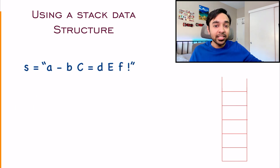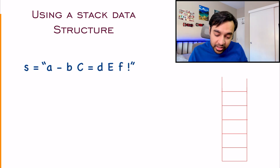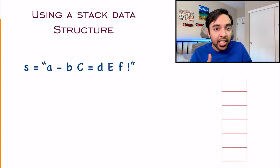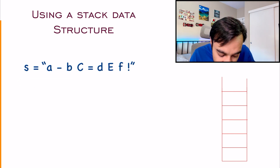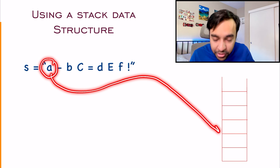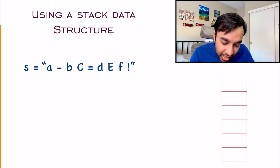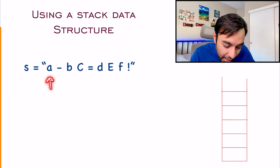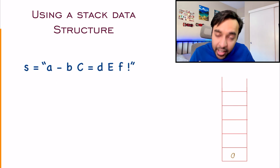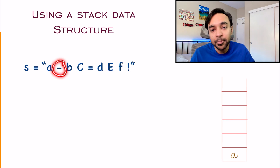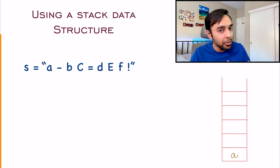If you're new to stacks, just check out my introductory video first. What I'm going to do is take the help of a stack data structure and iterate over this string character by character. If you get an English character, just take this character and put it in your stack. As I start iterating, I have my first character A, so this gets entered into your stack. Now move ahead — I have a hyphen sign. It is not an English alphabet, so you just skip it.